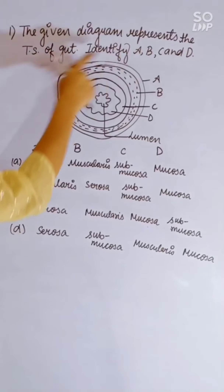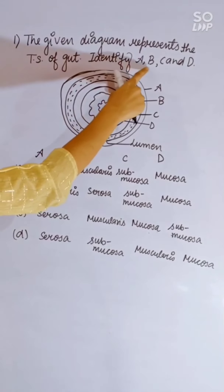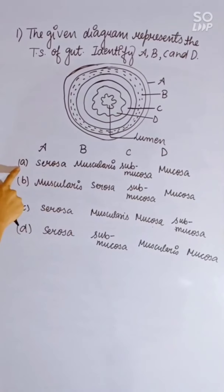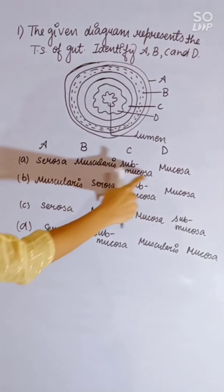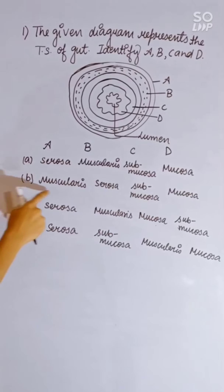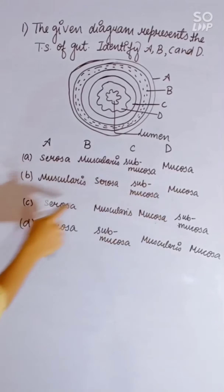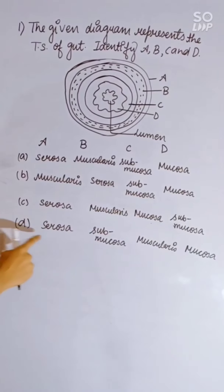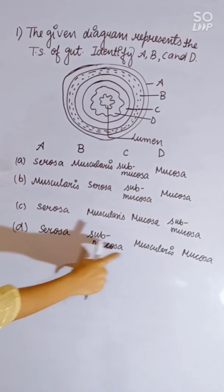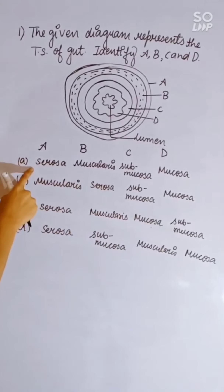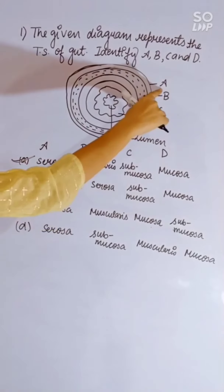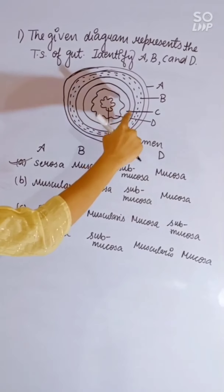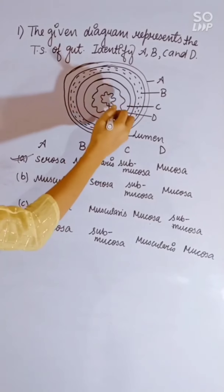The given diagram represents the transverse section of the gut. Identify A, B, C, and D. Correct answer is A: Serosa, B: Muscularis, C: Submucosa, D: Mucosa. The innermost layer is the Lumen.